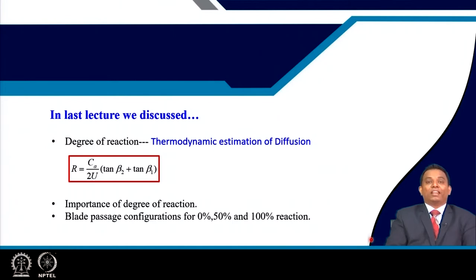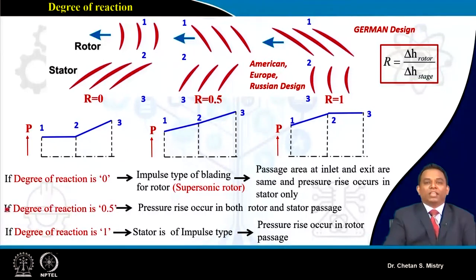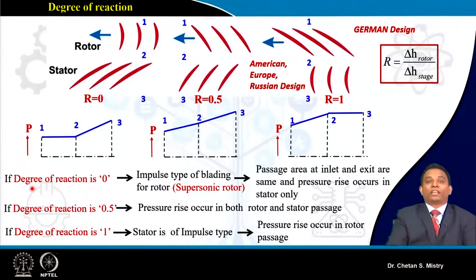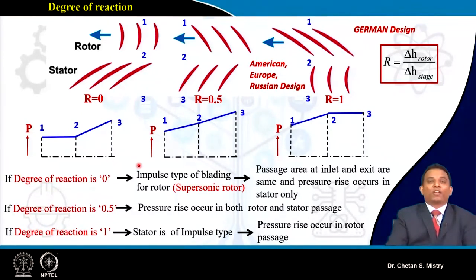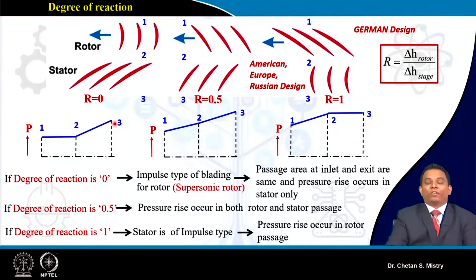In order to understand degree of reaction and its application, we look at three different configurations: degree of reaction equal to 0, degree of reaction equal to 0.5 (50 percent reaction), and degree of reaction equal to 1 (100 percent reaction). For 0 degree reaction, there is no diffusion happening in the rotor — all diffusion happens only in the stator, and that is the reason why pressure rise occurs only in the stator.